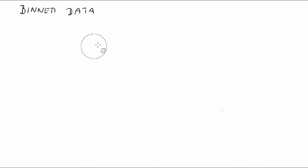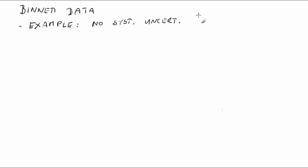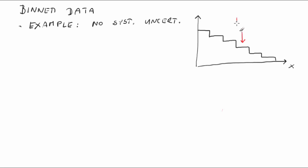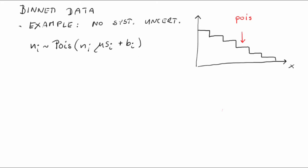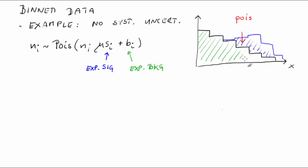Let's start with an unrealistic example without systematic uncertainties. Our model is very simple: the number of events in each bin of our histogram is distributed according to a Poisson distribution. For bin i, n_i is distributed according to a Poisson distribution with mean equal to mu times s_i plus b_i. Here s_i and b_i are the expected numbers of signal and background events in the bin, estimated from Monte Carlo.